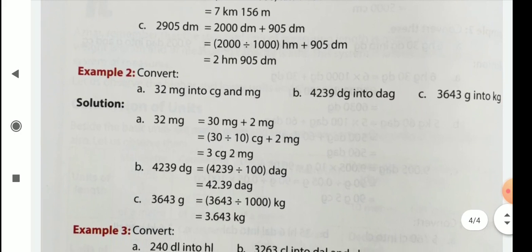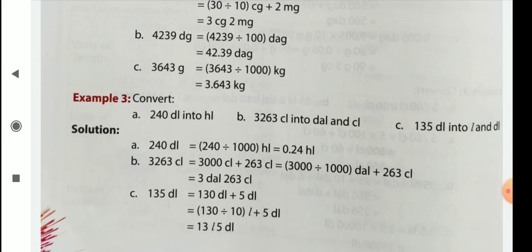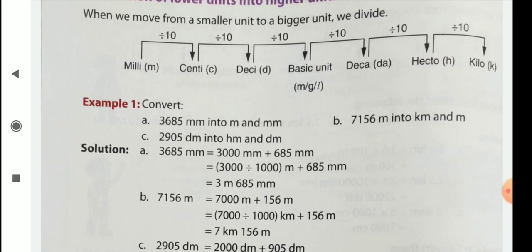Here also, milligram and centigram is given. We have to convert to milligram. So here, 1 milligram equal to how much? 1 by 10 centigram. So we divide by 10. And you have to continue our learning. Thank you children.